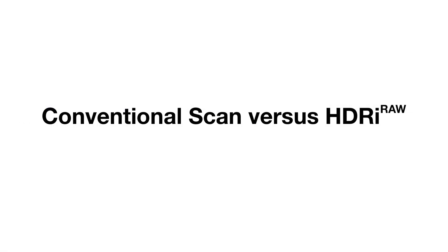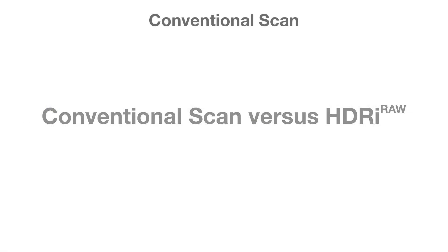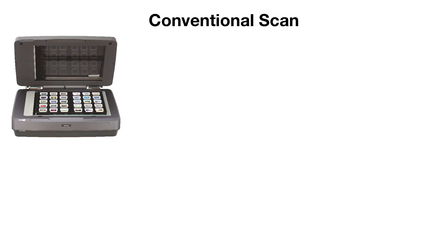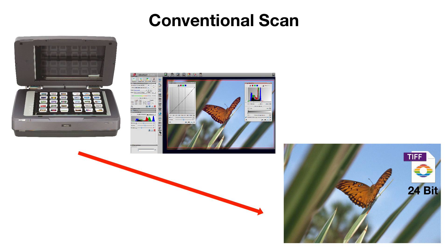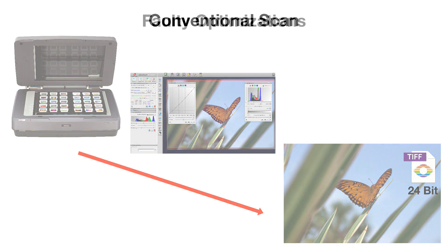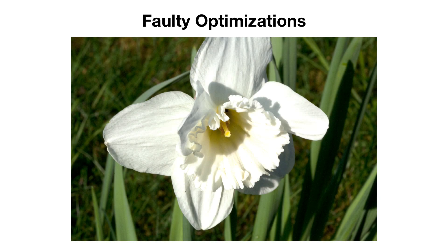What is the difference between an archived file and an image scanned in the usual way? The normal scanning workflow incorporates at least one scanner and one original image. The scanning software deploys image optimizations and corrections. The resulting image is saved as a 24-bit file. In some cases, it is possible for the optimizations to be faulty. This image, for instance, was brightened up too much.